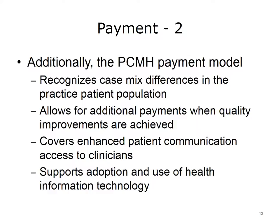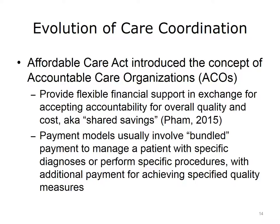The model allows for additional payments when measurable and continuous quality improvements are achieved and surpassed. It also covers enhanced patient communication, access to clinicians, and supports the adoption and use of health information technology for quality improvement. The Affordable Care Act introduced another type of care coordination called Accountable Care Organizations, or ACOs, which provide flexible financial support in exchange for accepting accountability for overall quality and cost — sometimes called shared savings. Payment models usually involve bundled payment to manage patients with specific diagnoses or procedures, with additional payment for achieving specific quality measures.